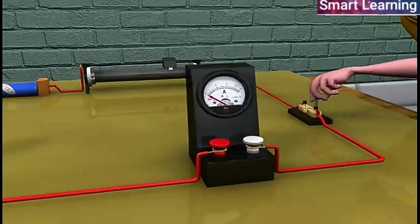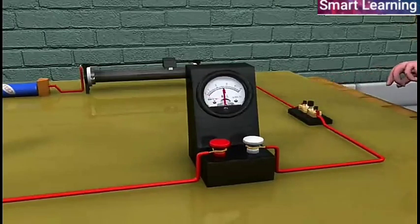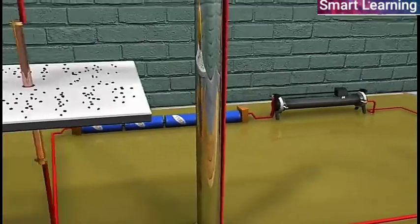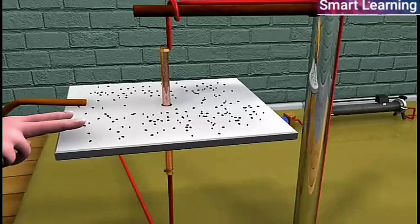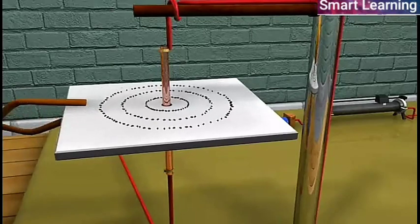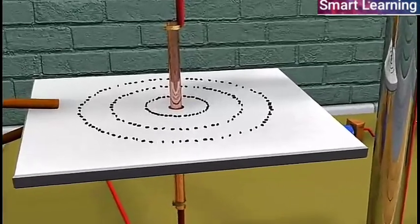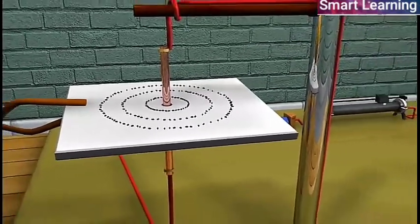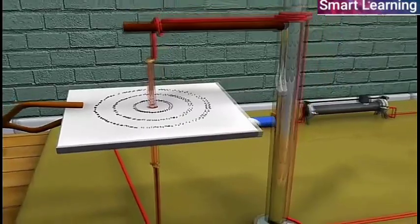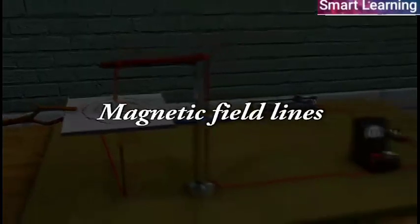Close the key so that the current flows through the wire. Gently tap the cardboard a few times. We observe that the iron filings arrange themselves in concentric circles around O. These concentric circles represent the magnetic field lines.